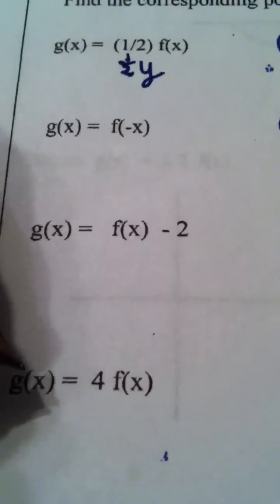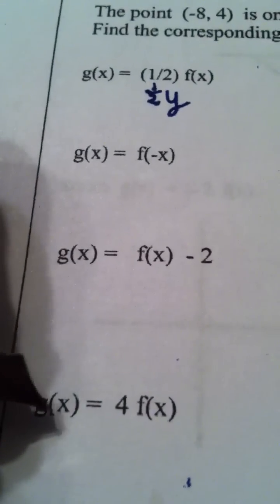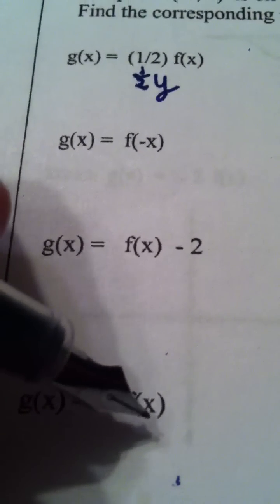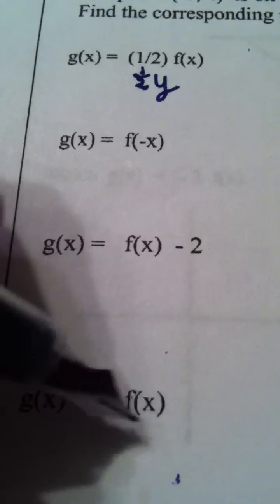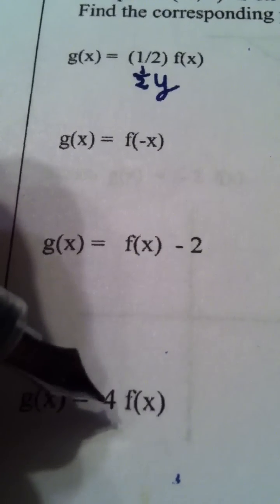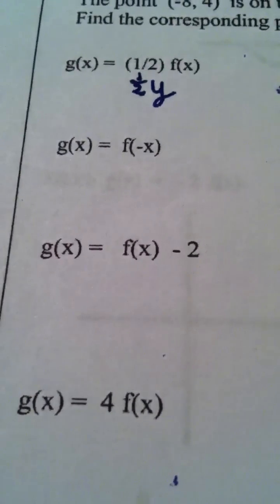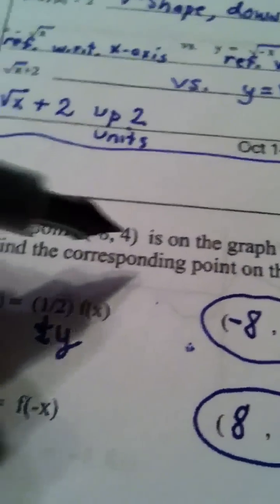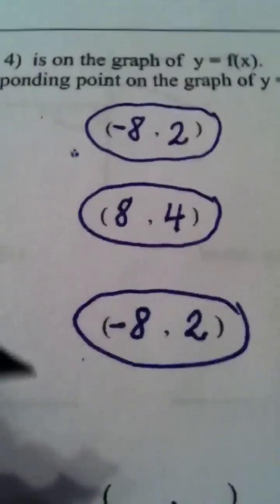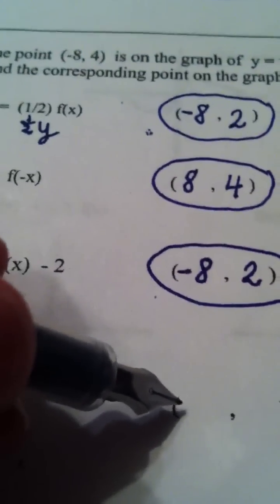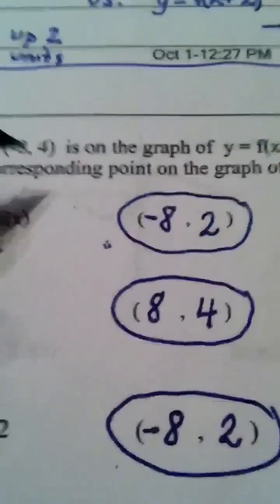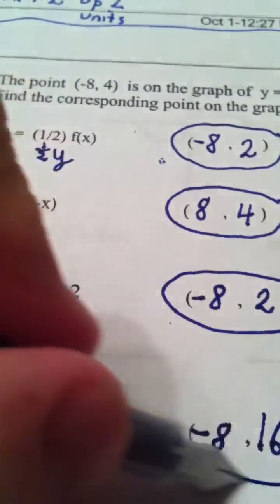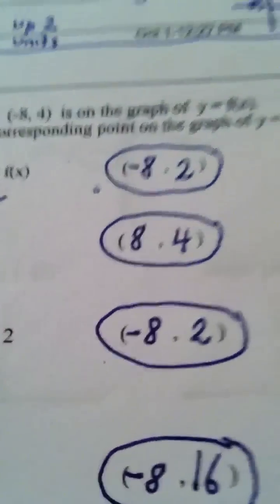All right, and my final thing they asked me to do here is to come up with a point on g(x) if the way we got it was by taking 4 times a point on f(x). Well, f(x) is really y. 4 times y is how we create this new function g. So, I come up to this point. I leave the x value alone. Negative 8. And 4 times y, 4 times 4, would be 16. And we're done.